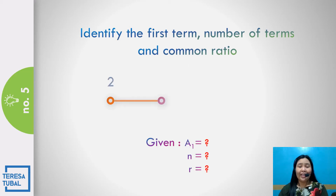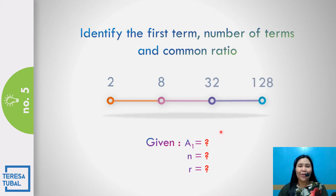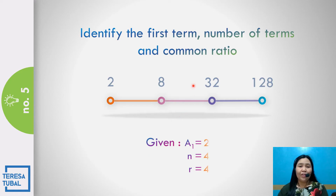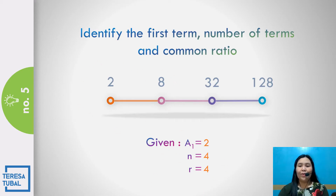Question number five: Find the first term, the number of terms, and the common ratio in the given geometric sequence 2, 8, 32, and 128. Correct! The first term is 2. The number of terms is 4. And the common ratio is 8 divided by 2. The answer is equal to 4.